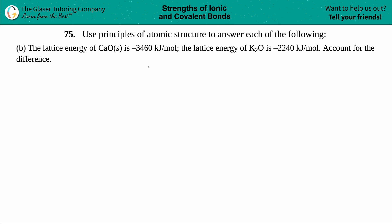Number 75, use principles of atomic structure to answer each of the following — letter b. It says the lattice energy of calcium oxide (CaO solid) is negative 3460 kilojoules per mole. The lattice energy of K₂O (potassium oxide) is negative 2240 kilojoules per mole. Account for the difference.